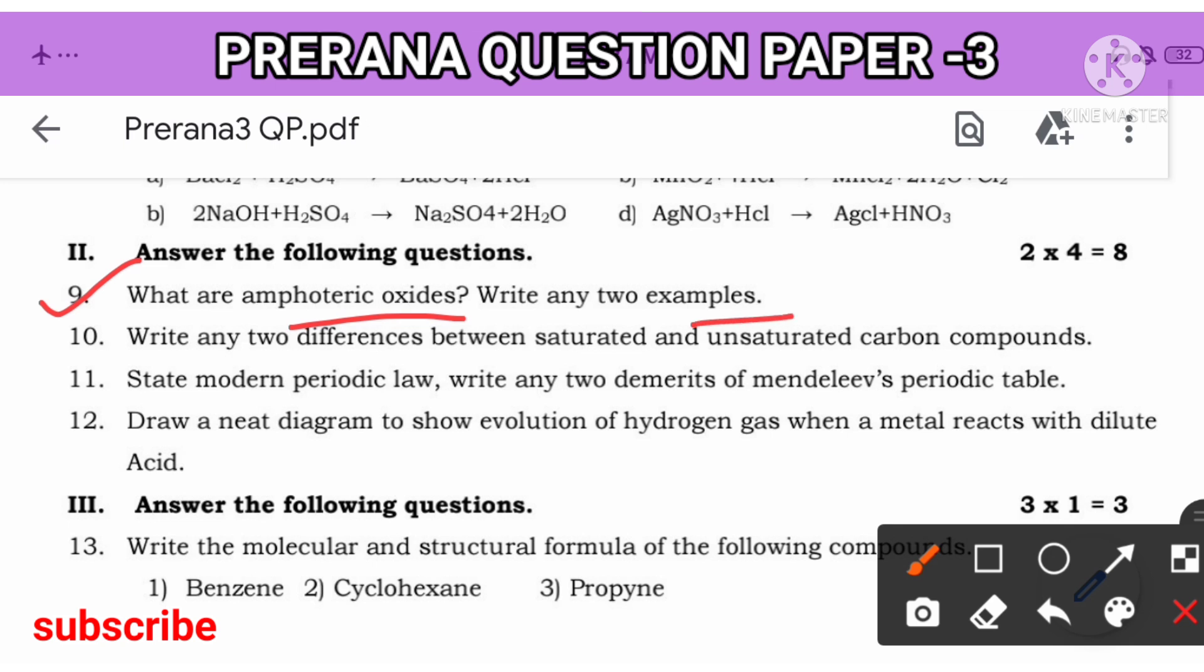Many times I said, write any two differences between saturated and unsaturated hydrocarbon. You know, saturated hydrocarbon is nothing but which is having single bond between carbon and carbon. Unsaturated is nothing but having double or triple bond. Saturated example is alkanes. Unsaturated examples are alkenes and alkynes. Saturated, they burn to give clear blue flame. Unsaturated, they burn to give yellow color sooty flame. You can write this for two marks.